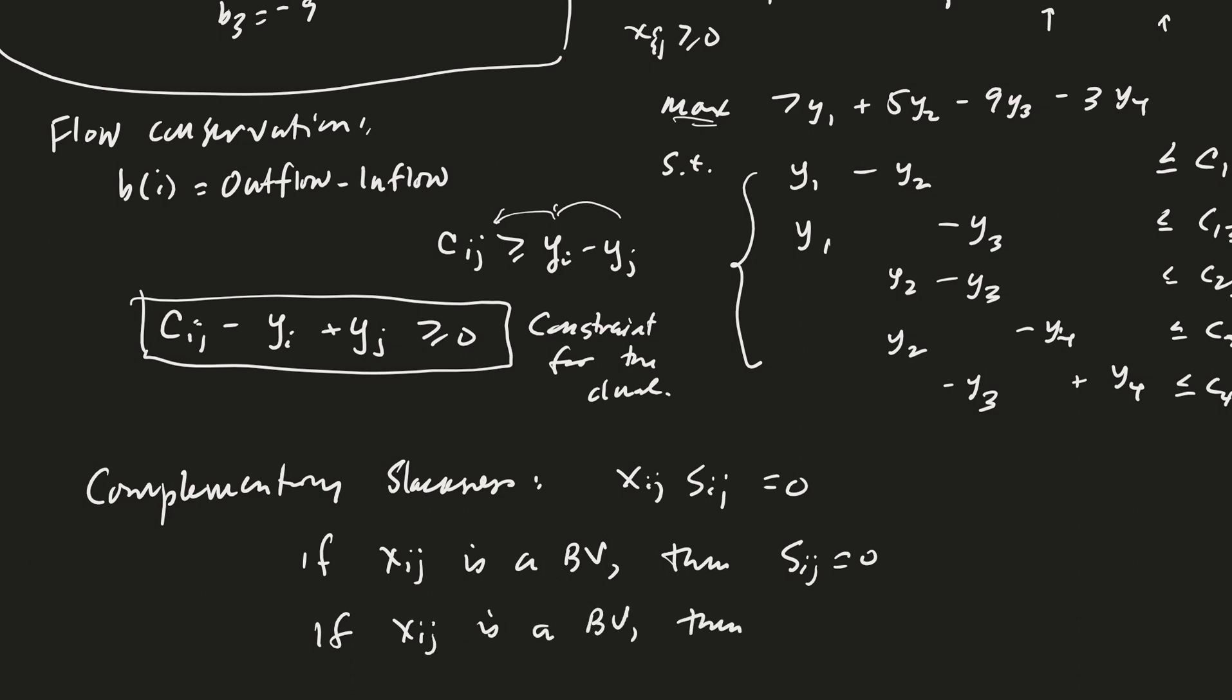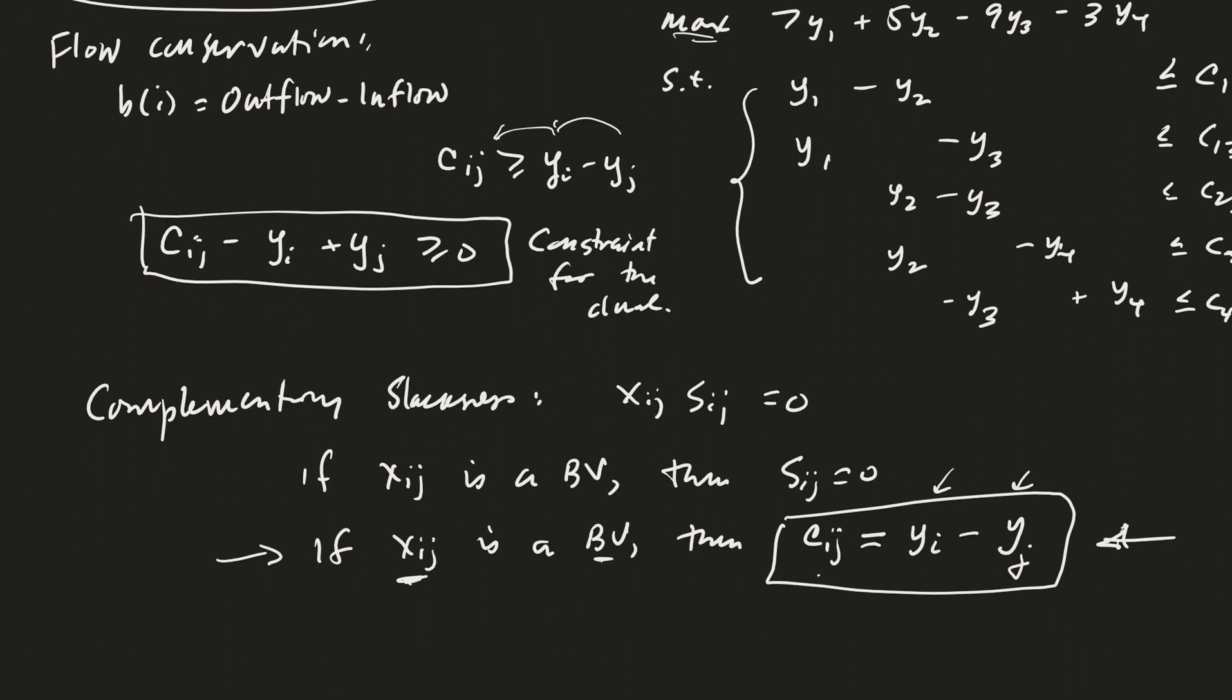If xij is a basic variable, then we have the equation cij = yi - yj. Instead of just having it less than or equal to, it is now equal to. Remember this is how we found the u's and v's in the transportation problem. The same thing is going to happen here. When we have a basic variable, by the way this is a flow value that's a basic variable, then the cost value is going to have this relationship. If only yi or yj is unknown, then we would be able to solve for it.